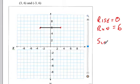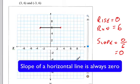So our slope, remember rise over run, is equal to 0 over 6, which equals 0. This is an important point to note: the slope of a horizontal line is always 0.